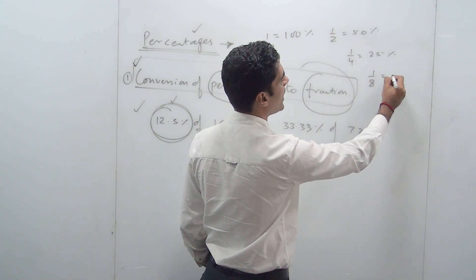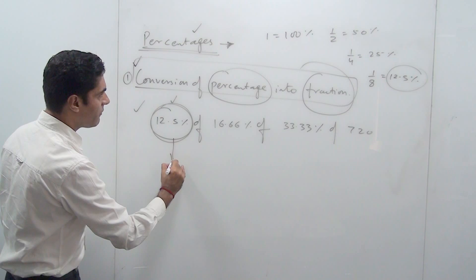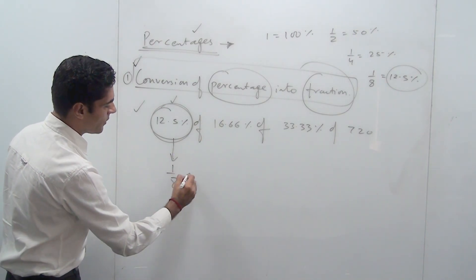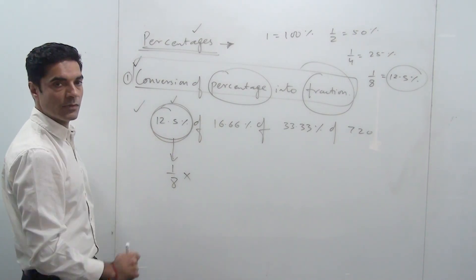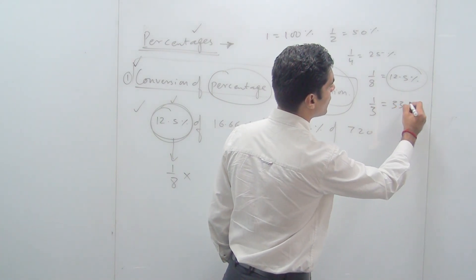So that means 12.5% is nothing but 1/8. The fractional part of 12.5% is 1/8. Similarly, we know that 1/3 is 33.33%.